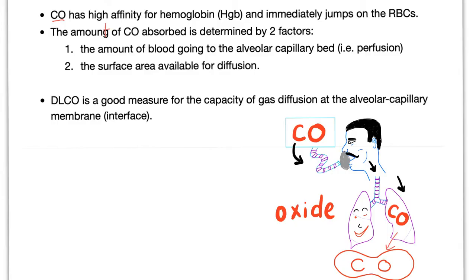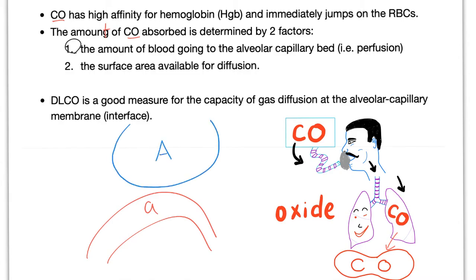The amount of CO absorbed is determined by two factors. Number one: the amount of blood going to the alveolar capillary bed — this is the story of perfusion. Number two: the surface area available for diffusion — here is the alveolus and here is the pulmonary artery. Those are the two factors. Causes of decreased DLCO: decrease the amount of blood going to the alveolus, or decrease the surface area available for gas exchange.